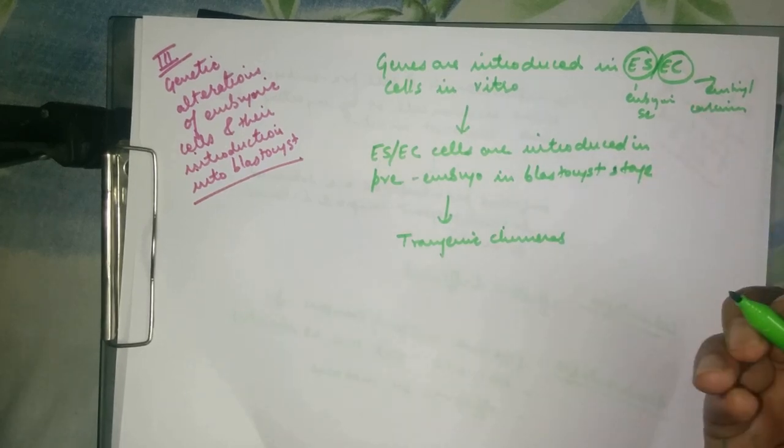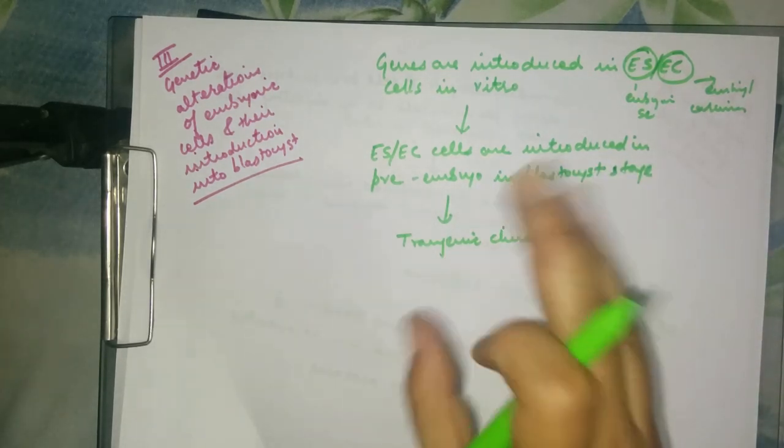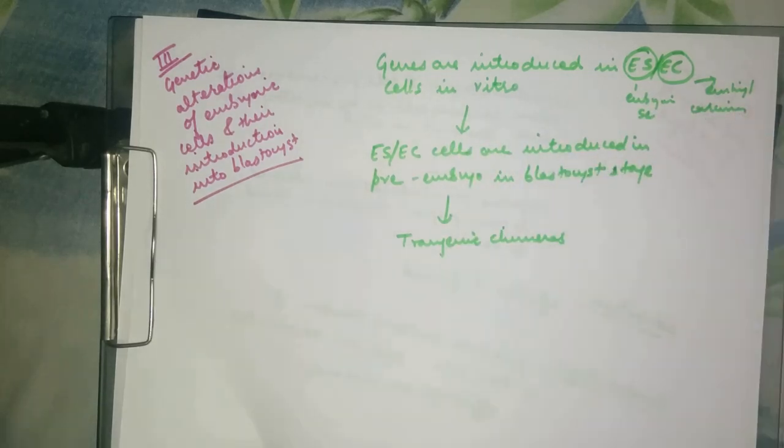Let me explain what a blastocyst is. A blastocyst is a structure formed in the earlier development of mammals. If our foreign gene gets inserted here, there is a high chance that we will obtain the offspring with the gene insert.